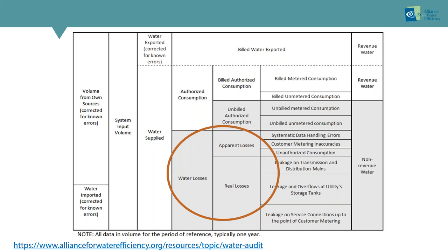In terms of non-revenue water, today we're not really going to be talking about unbilled or unauthorized consumption — water that is consumed but not metered or billed. We're going to focus on the section called water losses. There are two categories: apparent losses and real losses. Apparent losses are not real wet water leaking from pipes; they're inaccuracies that cause the utility to under-collect revenue and may distort consumption data, affecting demand projections and the ability to estimate conservation program impacts. This module does not focus on apparent losses — it focuses on real losses, the real wet water leaking out of pipes.